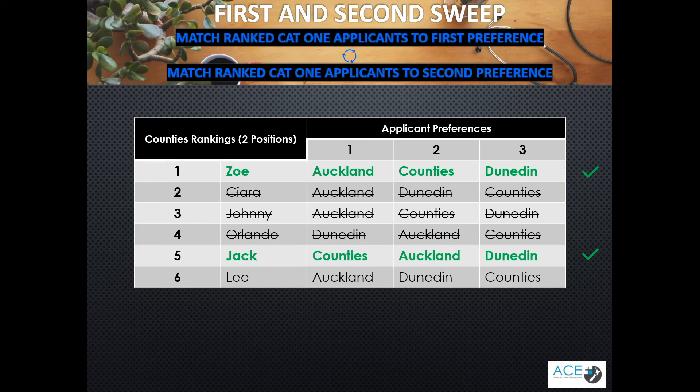To clarify, there are three people crossed out as they have been matched to their first preference DHB. In this example, it looks like Counties may have been disadvantaged, but in this sweep we are only looking at applicants who preference the DHB first. The algorithm can run any DHB first, and at no point does it advantage any other DHB.